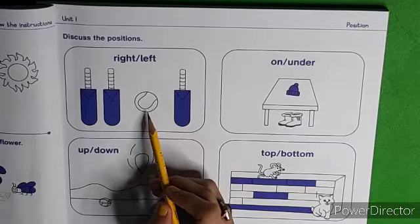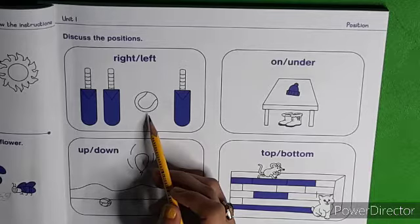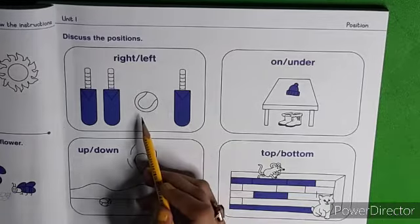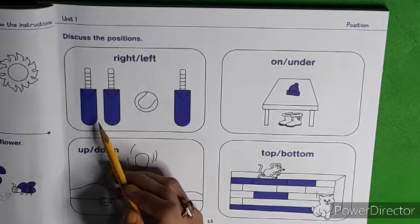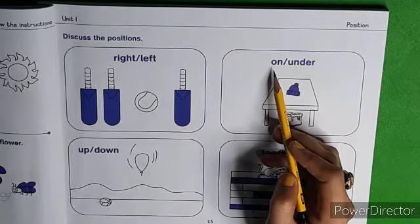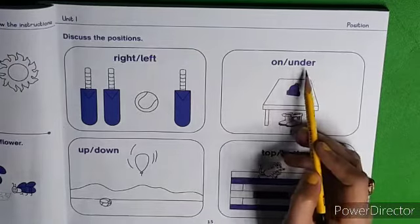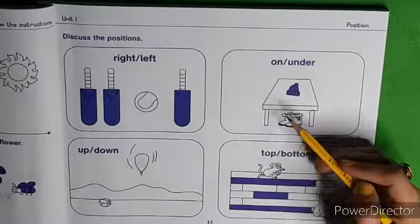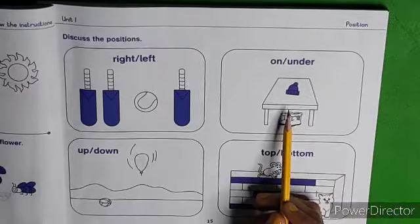How many bats are on the right side of the bowl? There is one bat on the right side of the bowl. How many bats are on the left side of the bowl? There are two bats on the left side of the bowl. On — On का मतलब होता है ऊपर. Under — Under का मतलब नीचे. On means on top of something, Under means below something. Where is the cap?